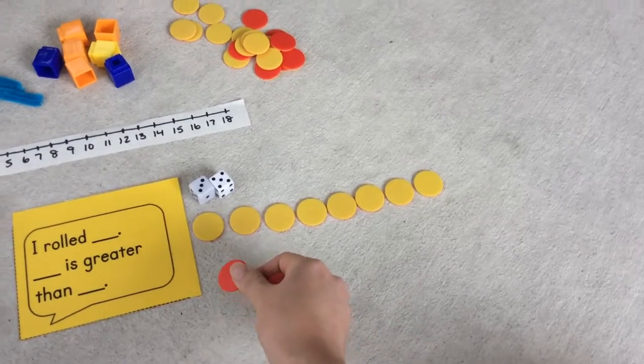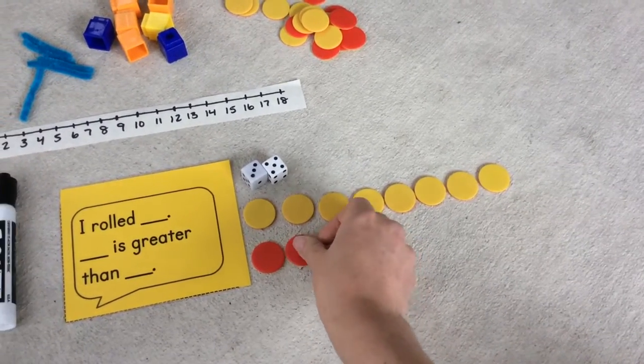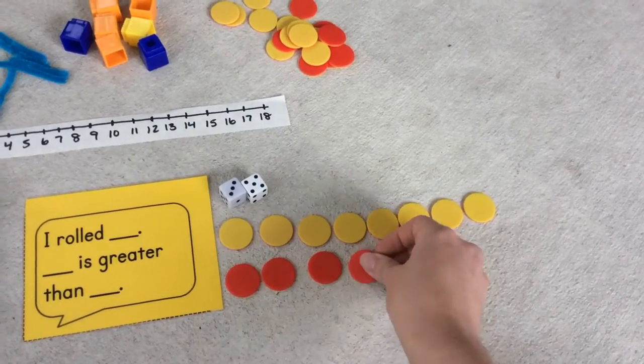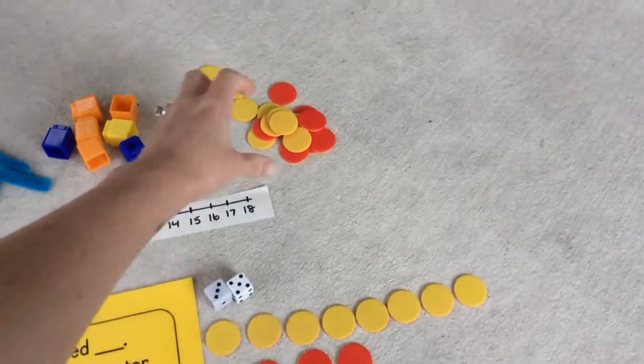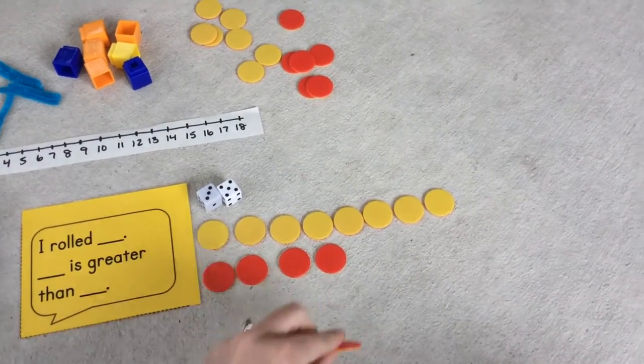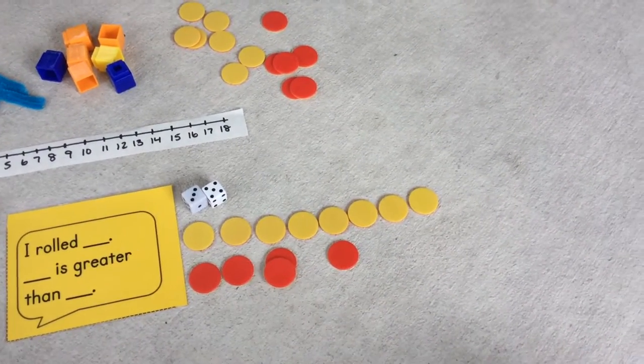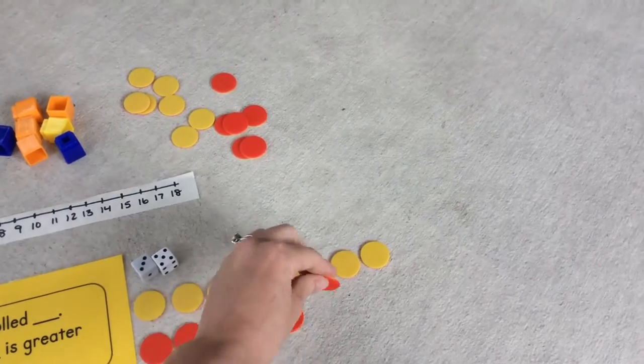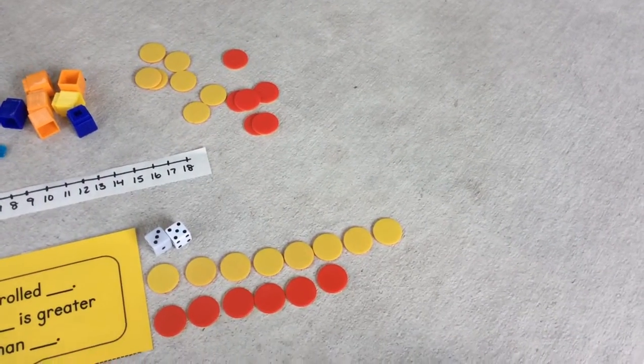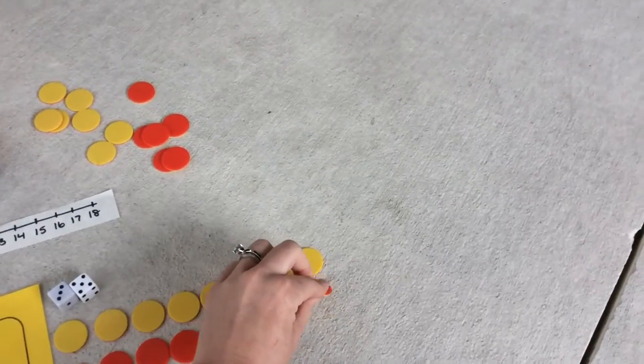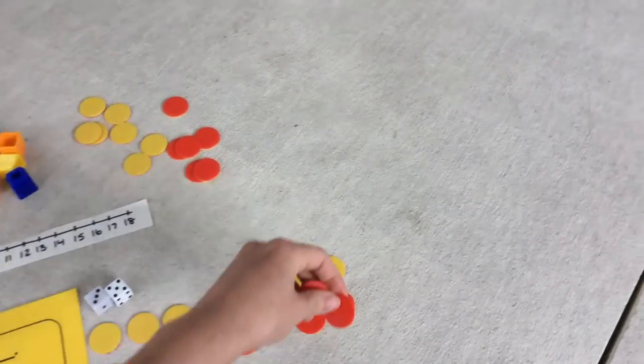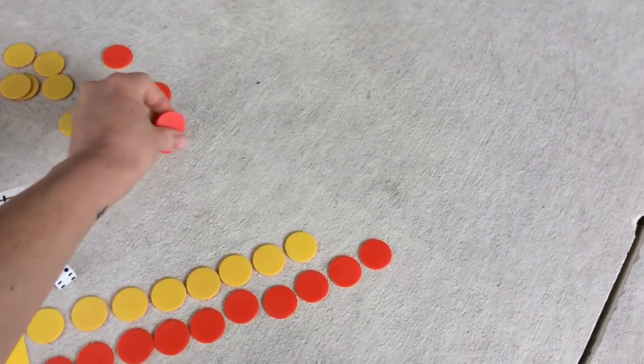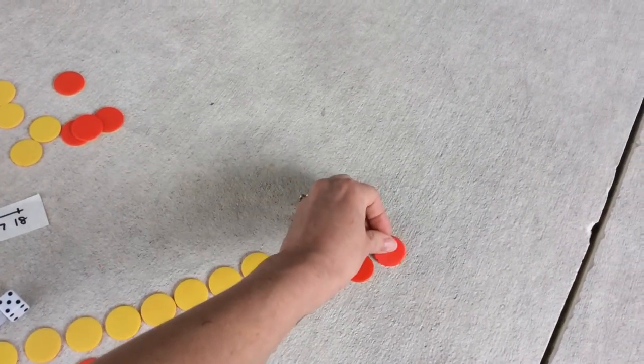So I'm going to make a set of 12. One, two, three, four, five, six, seven, eight, nine, ten, eleven, twelve.